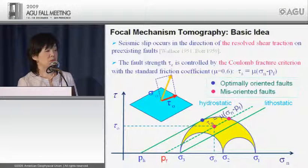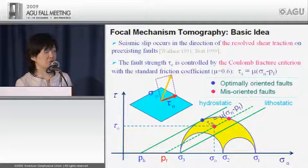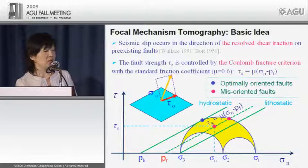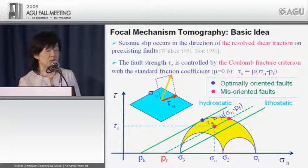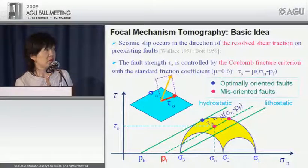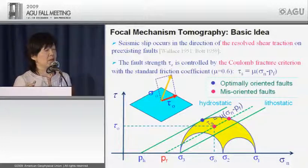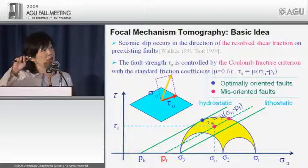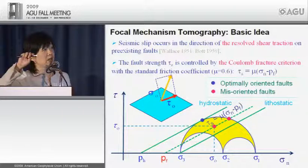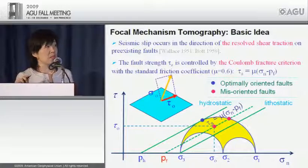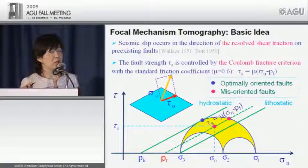The basic idea for focal mechanism tomography is that seismic slip occurs in the direction of the resolved shear traction on pre-existing faults — the same assumption as in stress inversion of fault slip data — and that fault slip is controlled by the Coulomb fracture criterion with a standard friction coefficient. Under hydrostatic fluid pressure, seismic slip occurs on optimally oriented faults. Increased fluid pressure decreases fault strength, shifting the failure envelope in the Mohr diagram and allowing slip on misoriented faults.